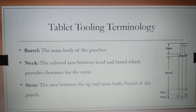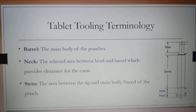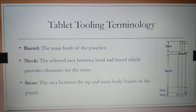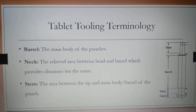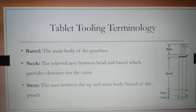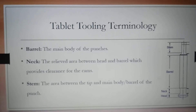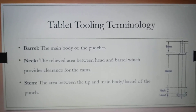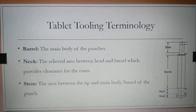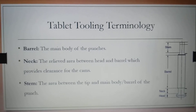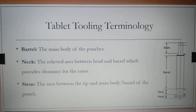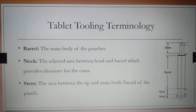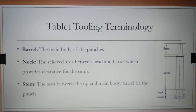Next, the neck is the relieved area between the head and barrel which provides clearance for cams. The stem is the area between the tip and the main body or barrel of the punch.